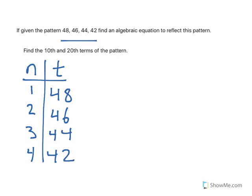The first thing we want to notice is what the pattern's going up or down by. In this case, it's going down by 2 each time, so it's negative 2. So I'm going to start with that. So t equals negative 2n is going to be involved.